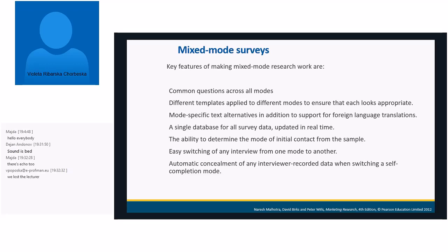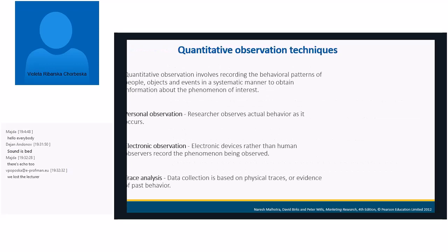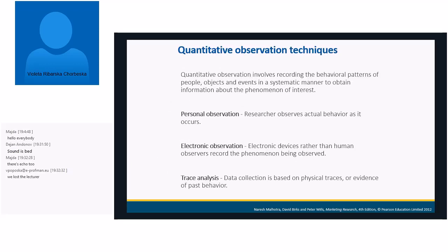Apart from this, I would like to talk about quantitative observation techniques, which are rather different. They include recording behavioral patterns of people, objects, or events in a systematic manner. They are divided into three categories: personal observation, electronic observation, and trace analysis.